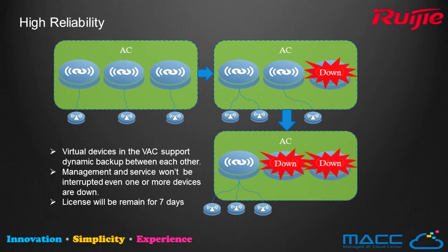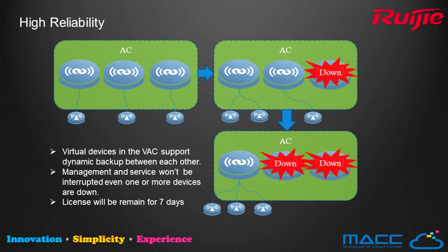In a business network, there is a huge impact if the service is inaccessible or data is lost. VAC technology provides high reliability to assure data delivery to intended recipients. Forwarding services — including Layer 3 routing protocols, Layer 2 ARP and MAC address tables, and so on — are dynamically backed up across each member, so service won't be interrupted even when one controller goes down. Additionally, the license key in the virtualization pool will be retained for 7 days to prevent AP loss due to license key issues when a member goes down.